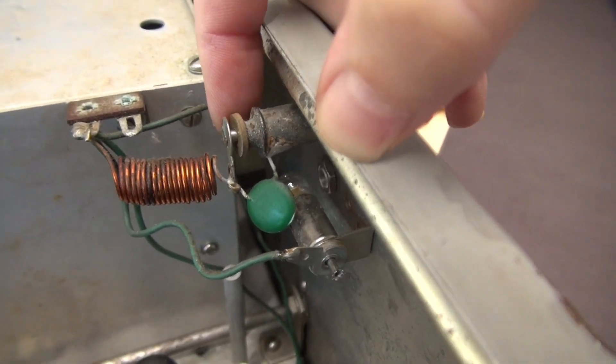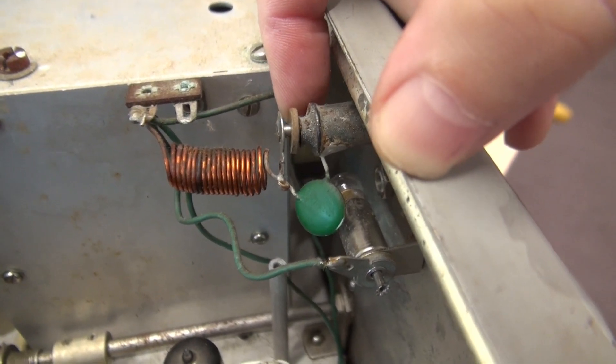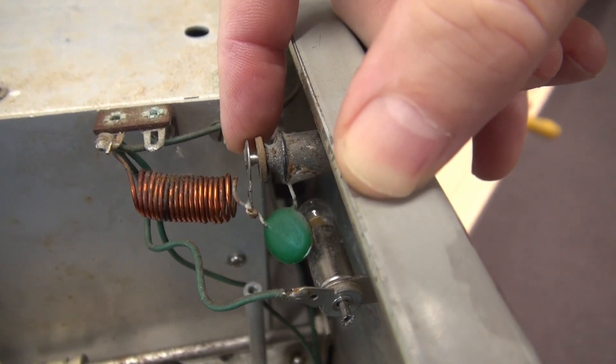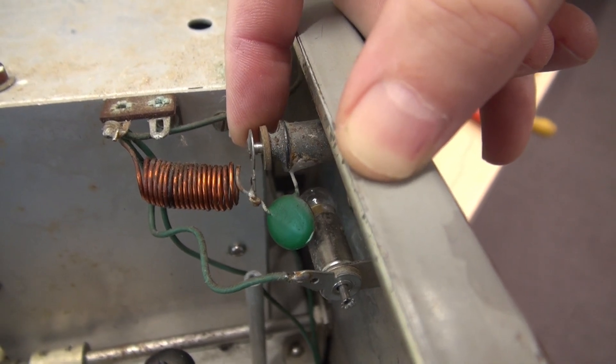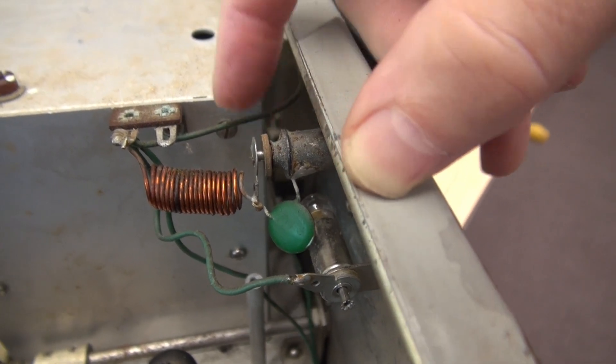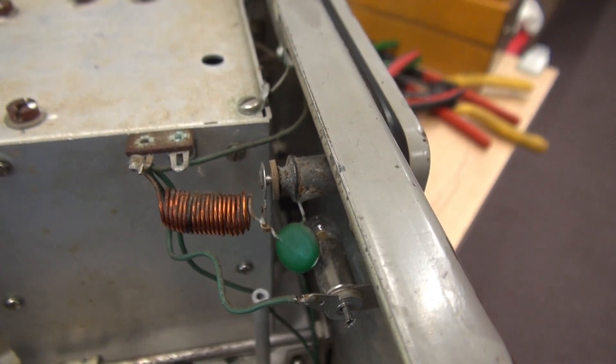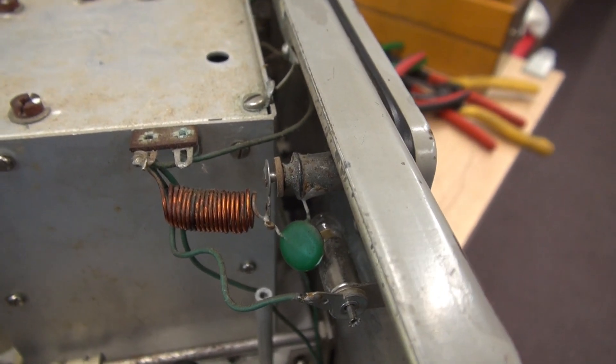There is a phenolic spacer in here. And you see it's very loose, which sometimes allows the center post to shift and contact the case. When that happens, it fries the wiring in the Ranger because the filament circuit is not fused.